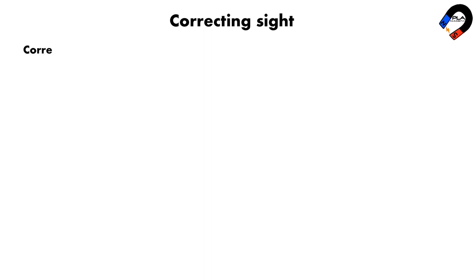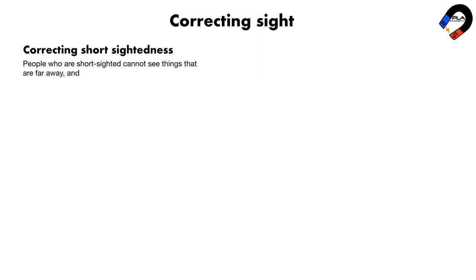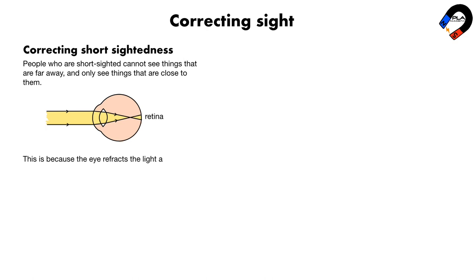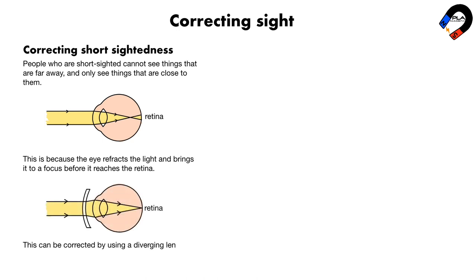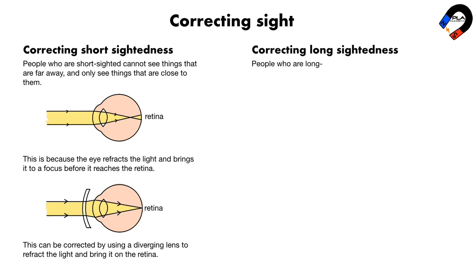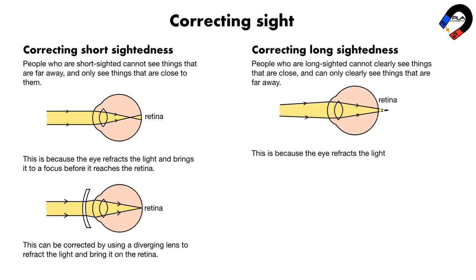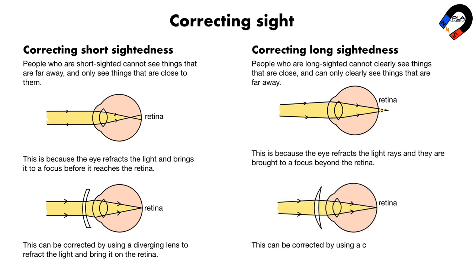Correcting short-sightedness: people who are short-sighted cannot see things that are far away. This is because the eye refracts the light and brings it to a focus before it reaches the retina. This can be corrected by using a diverging lens to refract the light and bring it onto the retina. Correcting long-sightedness: people who are long-sighted cannot clearly see things that are close. This is because the eye refracts the light rays and they are brought to a focus beyond the retina. This can be corrected by using a converging lens to refract the light and bring it onto the retina.